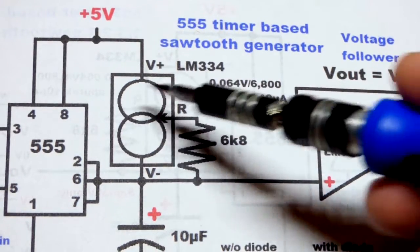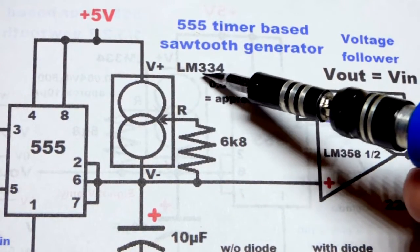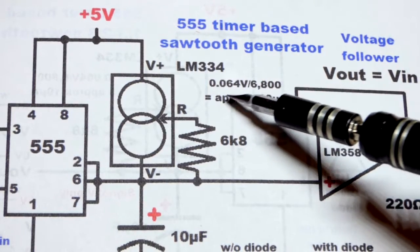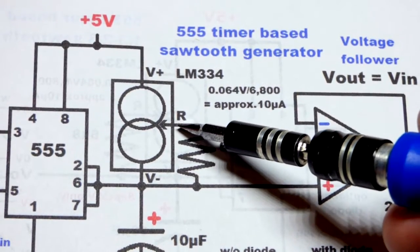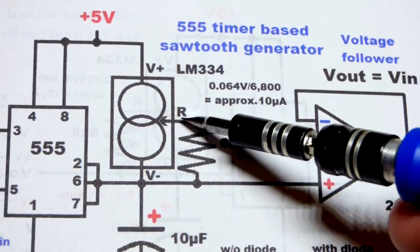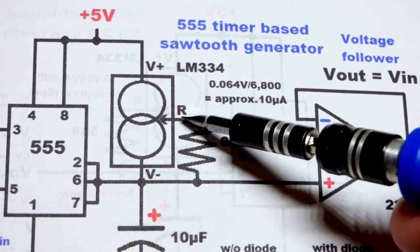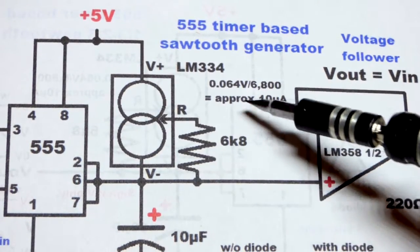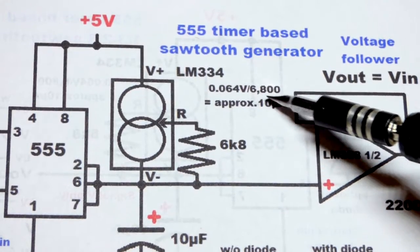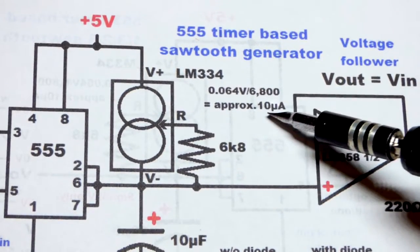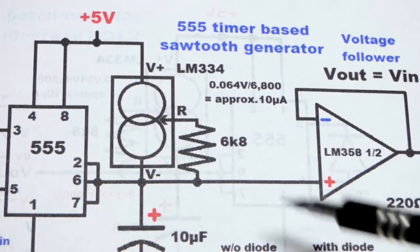I'm just going to do a quick review. In this three terminal device, it looks like a transistor, but with the LM334 it applies 0.064 volts, 64 millivolts between those two pins. You put a resistor in there and so that voltage divided by the resistance, 6,800 ohms right there, we're going to get about 10 microamps.